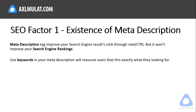It's better to optimize your meta description. The meta description tag improves your search engine click-through rate, but it won't improve your search engine rankings. So write a better meta description for your blog and use a keyword in your meta description to assure users that this is exactly what they're looking for.